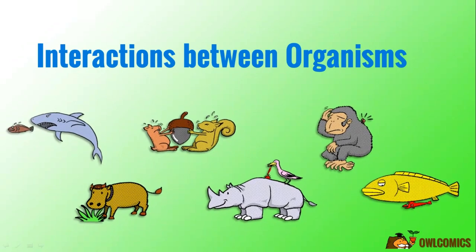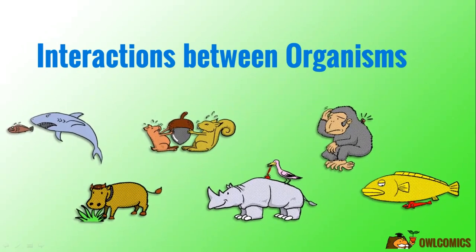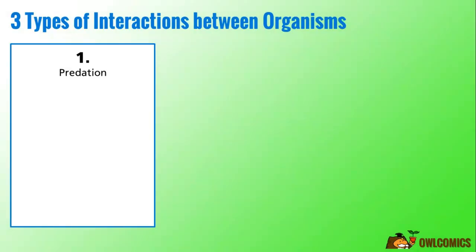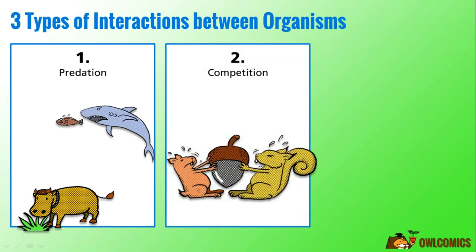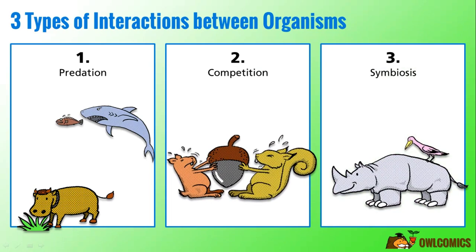Hello everyone! Today's topic is interactions between organisms. There are three types of interactions between organisms: predation, competition, and symbiosis.